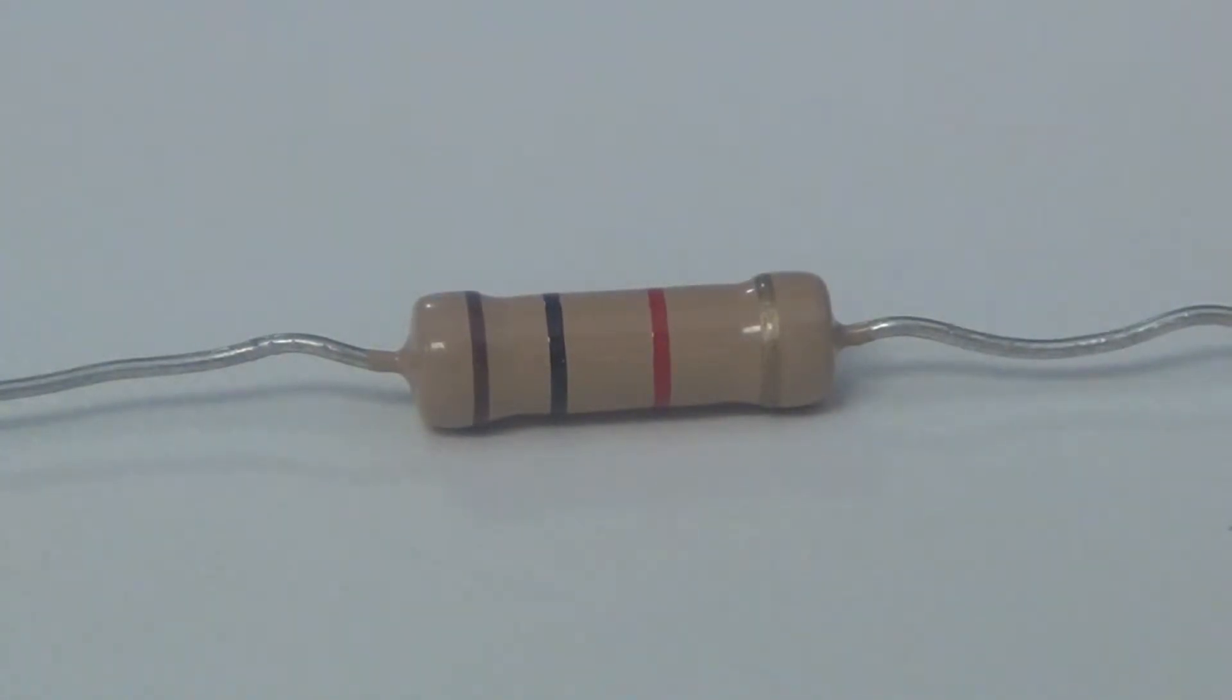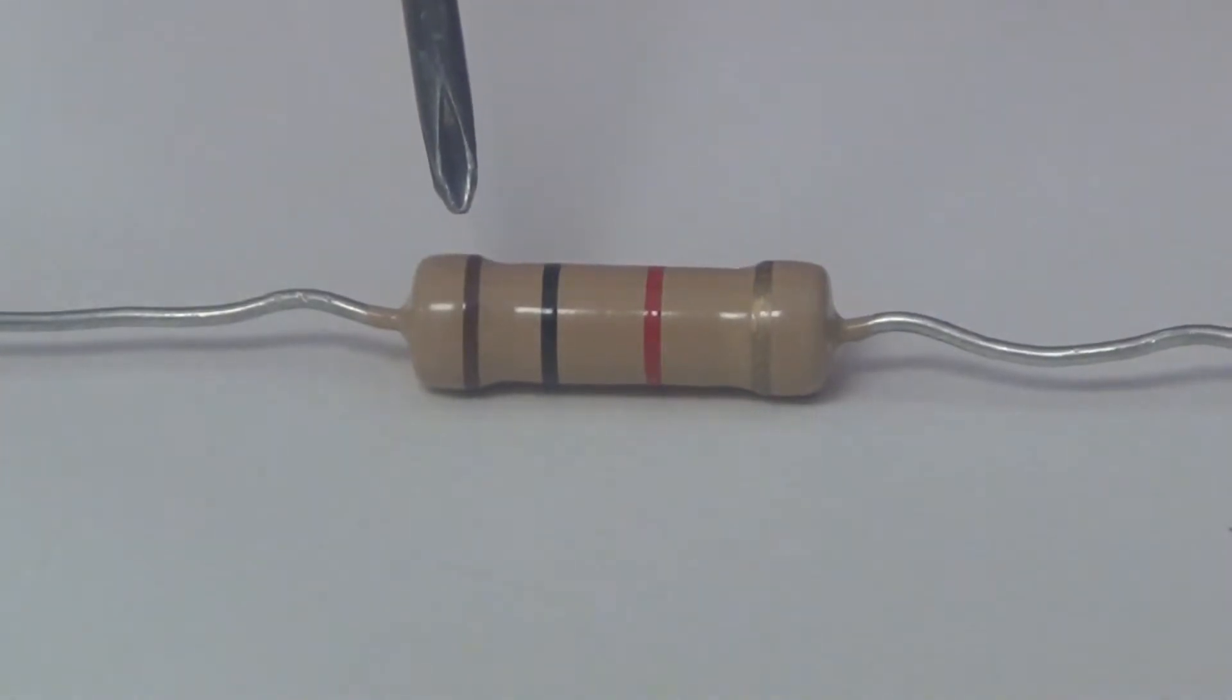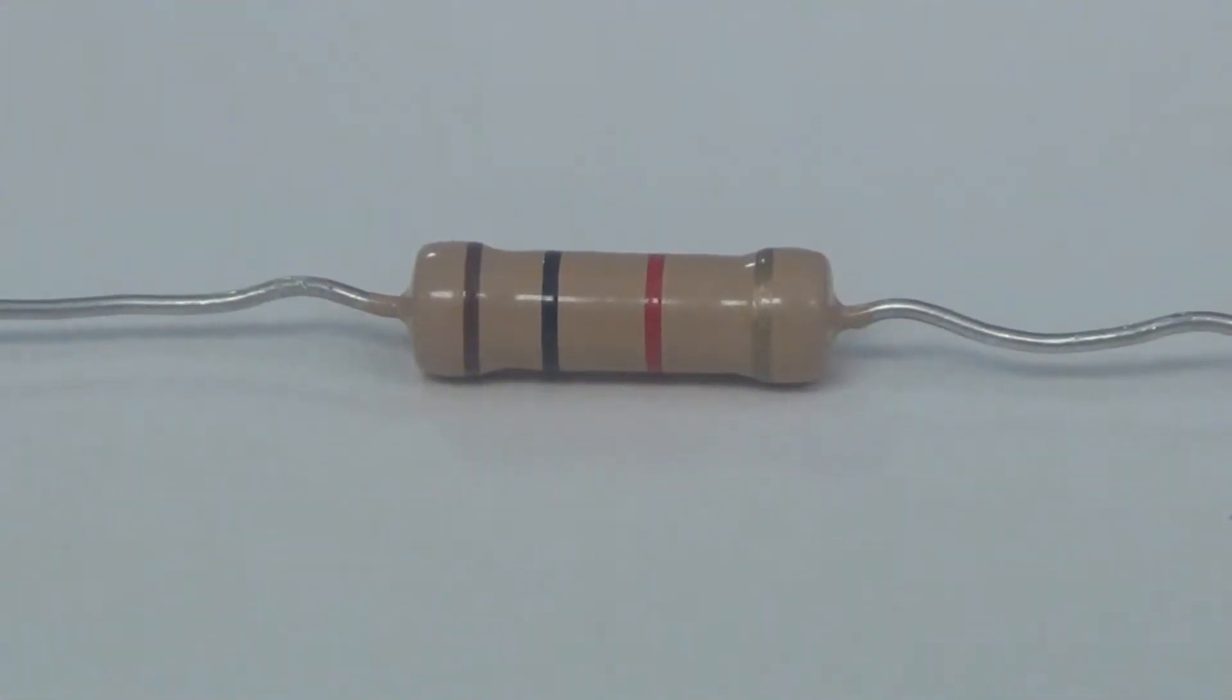This is a 4 band color code resistor. The first number is brown, which is 1, the second is black, which is 0, red is a multiplier, which is 2 zeros, and gold is a 5% tolerance, so this is a 1,000 ohm resistor.